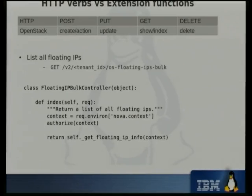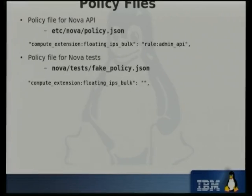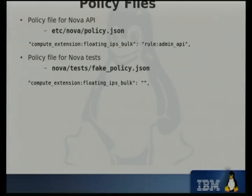There are some policy files which define who can access the API by default. This is an example from the floating IPs bulk extension — in this case, just defining that you need admin privileges to access it. Also, to run the unit tests you need to edit another policy file used just for the tests themselves. In that case you don't need any restrictions, but it does need to exist — otherwise your unit tests won't work.